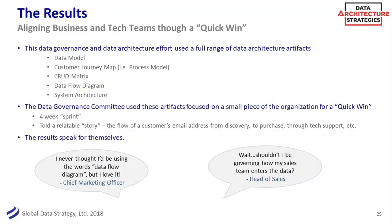The first story was: how do we get a customer's email address from when they first joined to when they called tech support? And eyes were opened. The chief marketing officer was the one who said 'I love data flow diagrams.' My favorite quote was from the head of sales, who after all of this said, 'shouldn't I govern how my sales team enters the data?' He actually used the word govern. He had never seen how the data flowed downstream — his sales team was incented to sell products and not going to worry about getting the right email address. But when he saw where it was used downstream in marketing, he saw the value and was actually willing to change how he did things. So a great success story of doing data models, CRUD matrices, and data flow diagrams, but in a very small focused way that told the story.